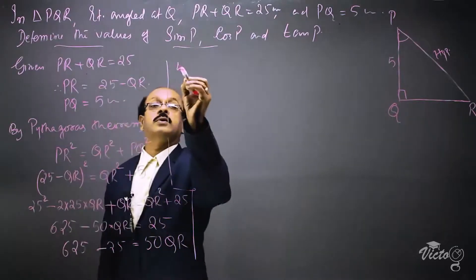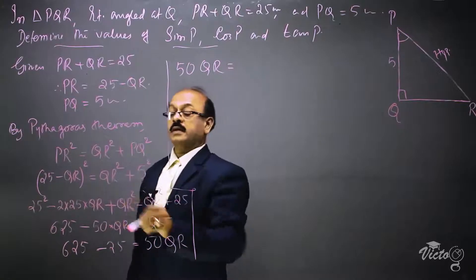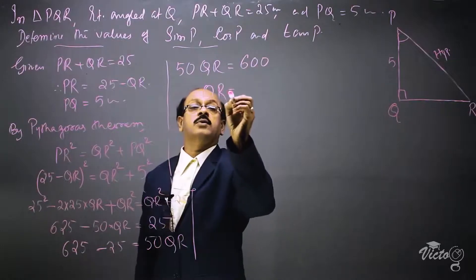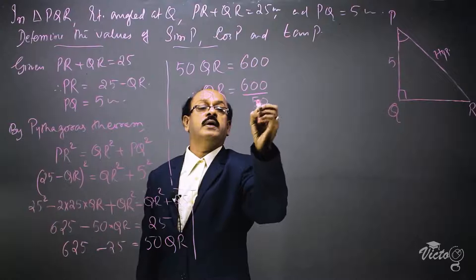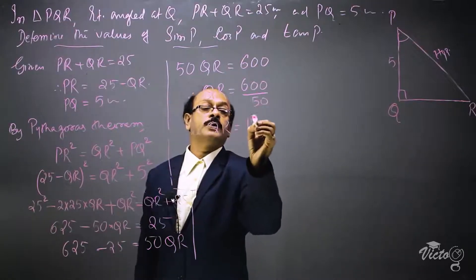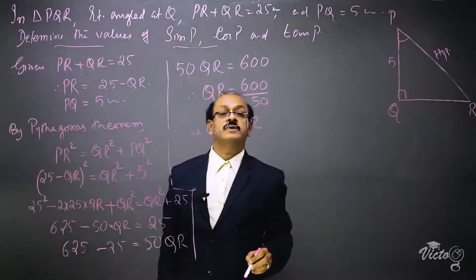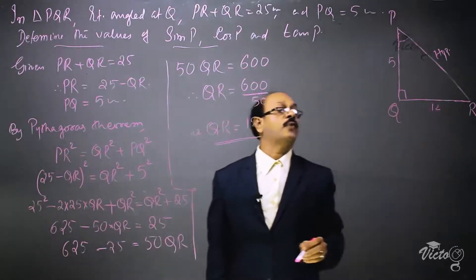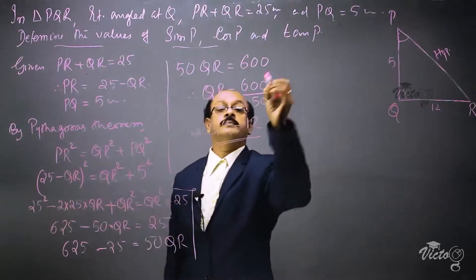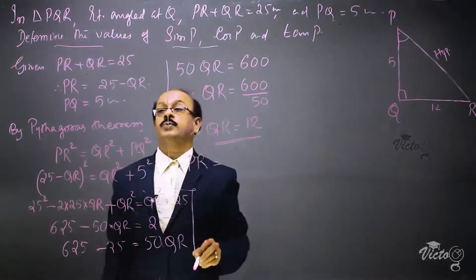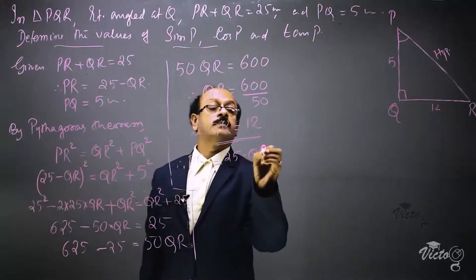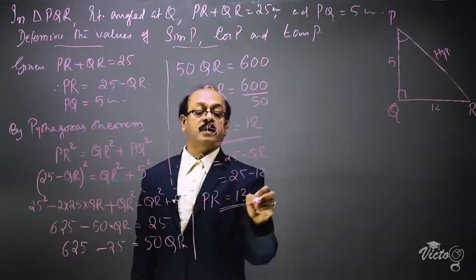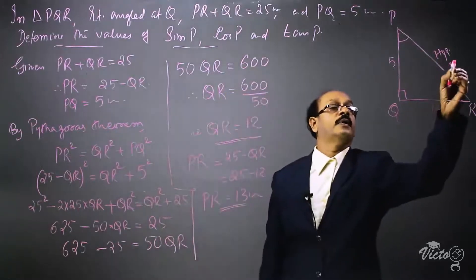So 50 QR equals 625 minus 25, which is 600. Therefore QR equals 600 divided by 50, which simplifies to 12. We obtained the value of QR equal to 12. Therefore PR equals 25 minus QR, which is 25 minus 12, giving PR equal to 13 centimeters. PR is the hypotenuse and its value is 13 centimeters.